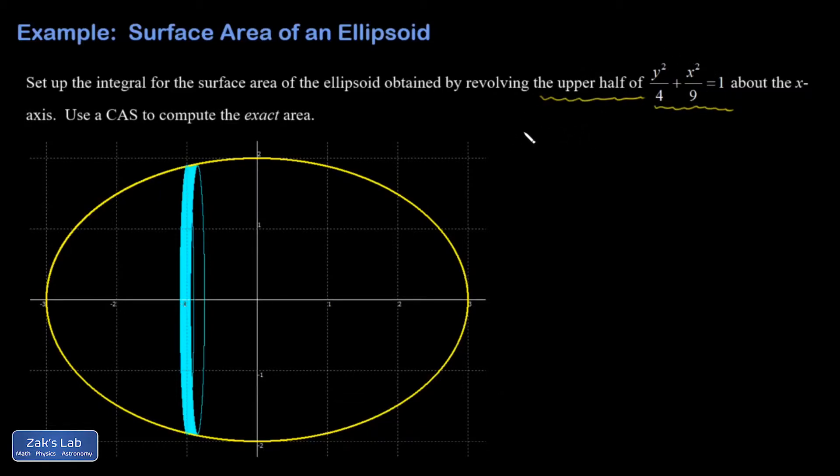So a little bit of scratch work before we start really doing anything else. Subtract the x term, multiply by 4, and square root. So I have y squared equals 4 times the quantity 1 minus x squared over 9. Take the square root, and I'm only keeping the positive root because I want the upper half. And I'll go ahead and leave the 4 out in front. So that's 2 square root 1 minus x squared over 9.